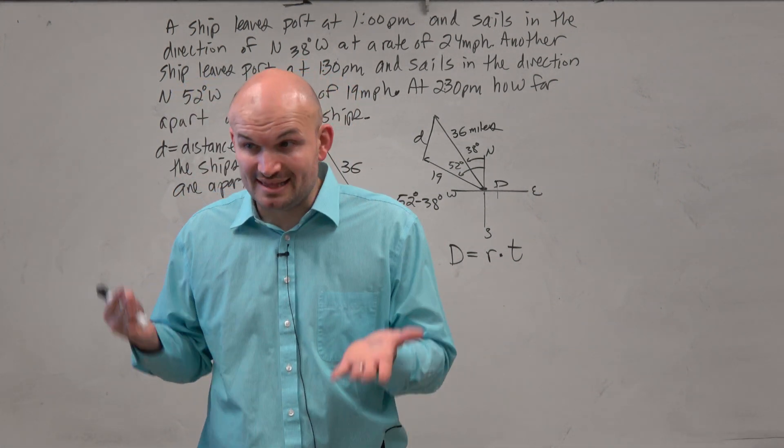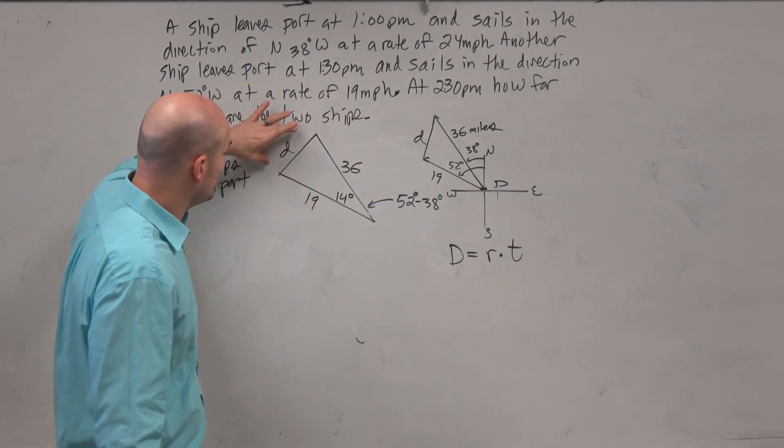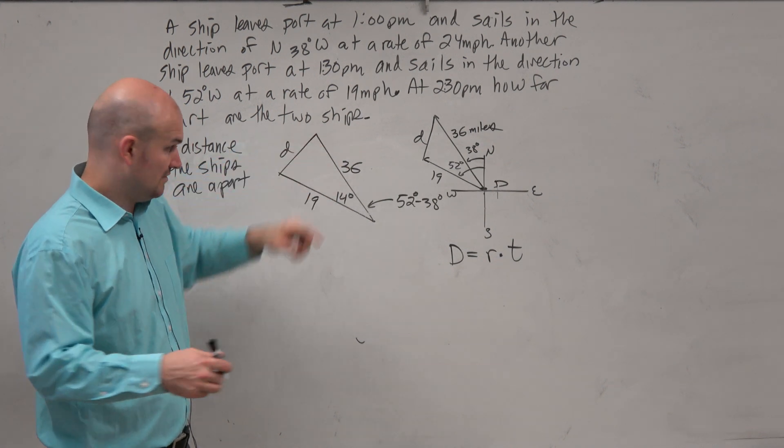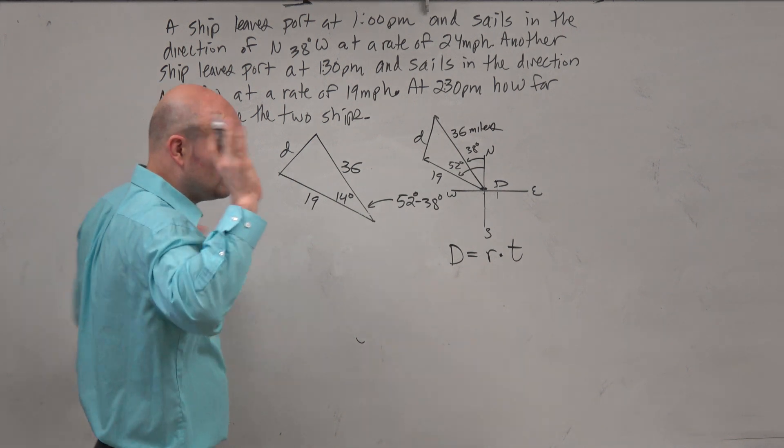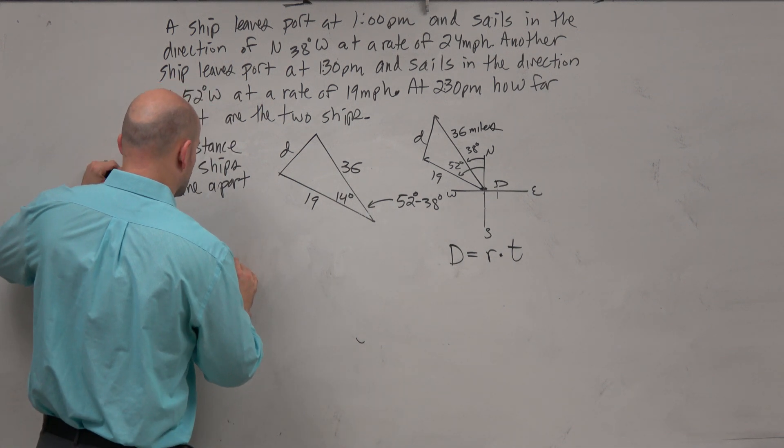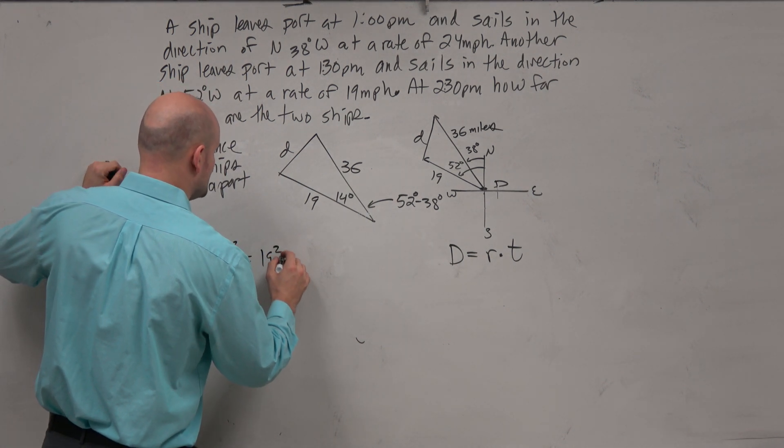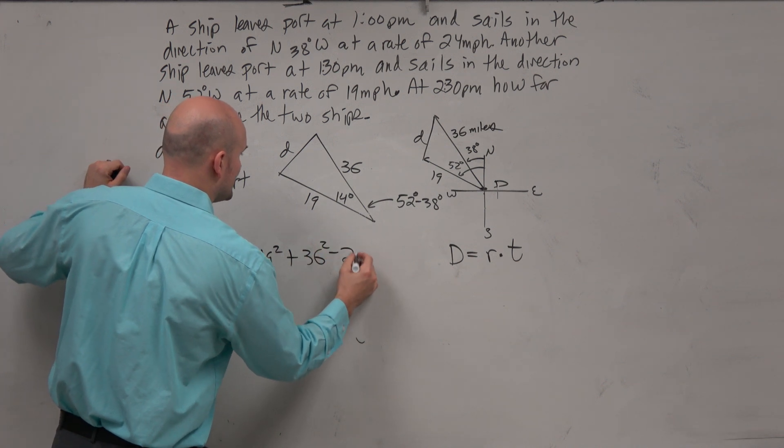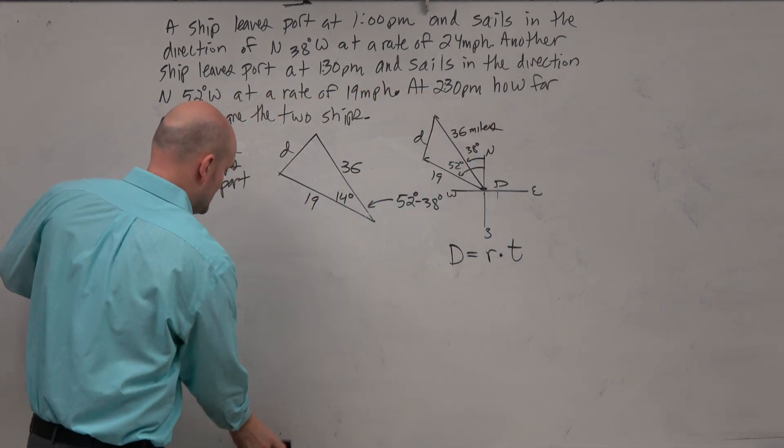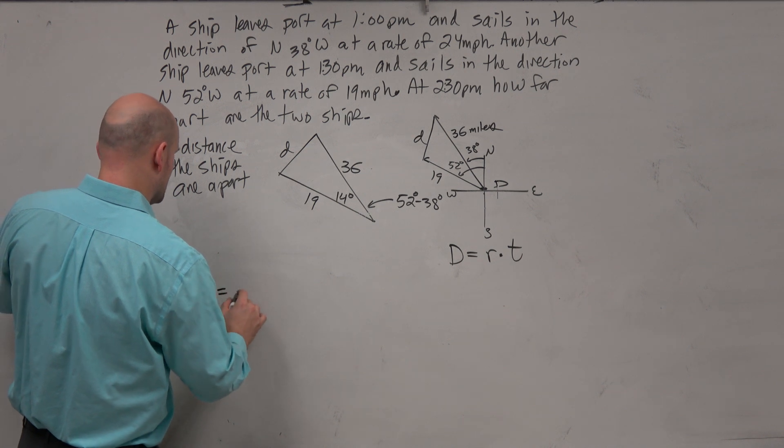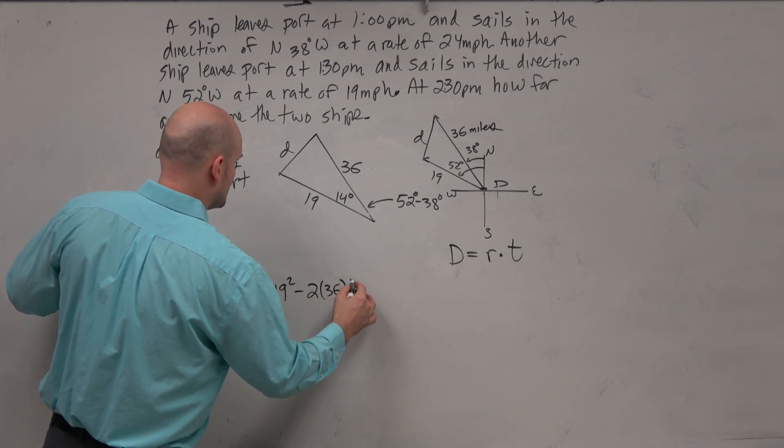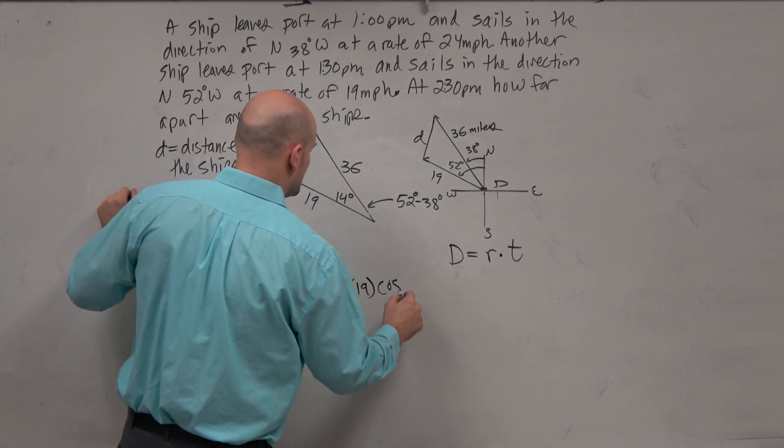And now I recognize I'm trying to find the distance, right, or a length of a triangle. I have side, angle, side. I don't have a ratio, so I can't use the law of sines, but I can use the law of cosines. So, therefore, based on my formula, which doesn't have D in it, right? It's only A, B, and C. I need to make sense of the measurements I have. So, I can say D squared is going to equal 19 squared plus 36 squared minus 2 times 19. Let's put this a little bit lower, so I have more room. So, D squared equals 36 squared plus 19 squared minus 2 times 36 times 19 times the cosine of 14 degrees.